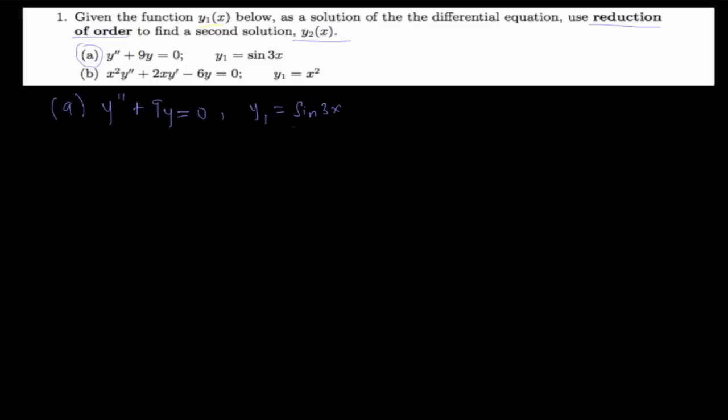For part a, we are given that y'' + 9y = 0, and we are told that y1 = sin(3x). Now we want to find y2, and the y2 we want to find has to be linearly independent to y1. So we assume y2 is a multiple of y1, but the u here is not a constant — it's a function of x.